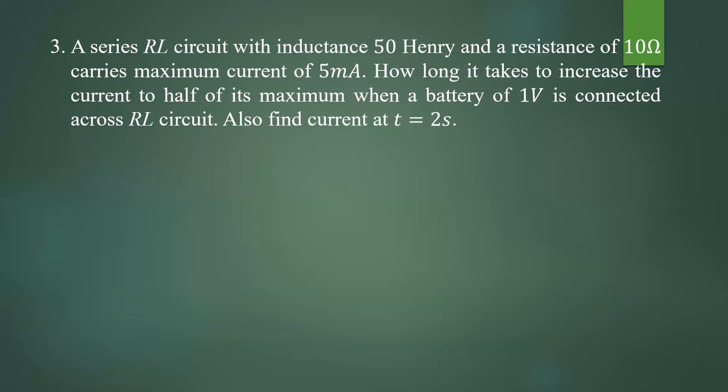It is a little bit tricky. You have to find how long it takes to increase the current to half of its maximum. Maximum current is already given as 5 milliampere. Half of that maximum current means it is 2.5 milliampere. So the question is: what is the time at which the current through the circuit becomes equal to 2.5 milliampere?